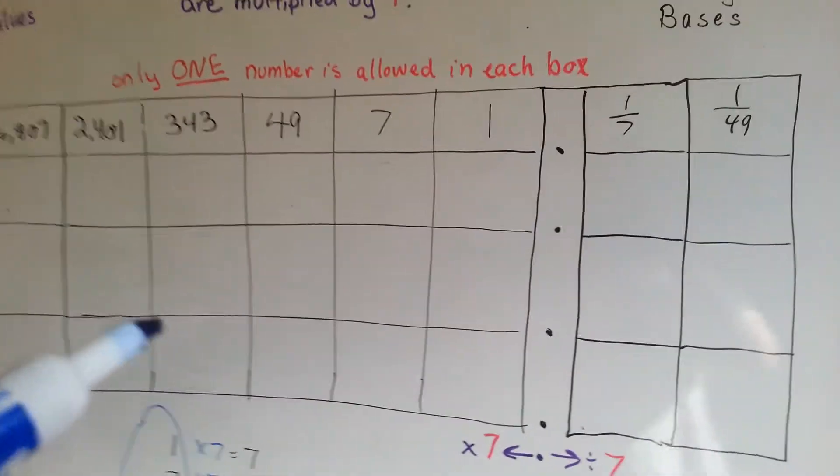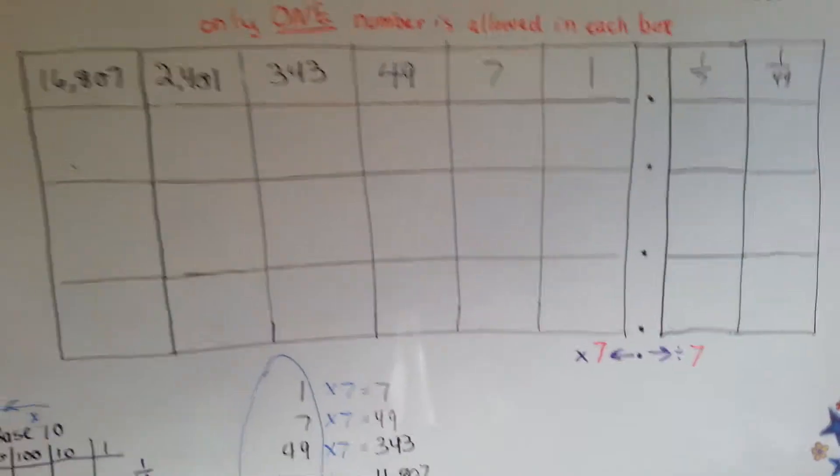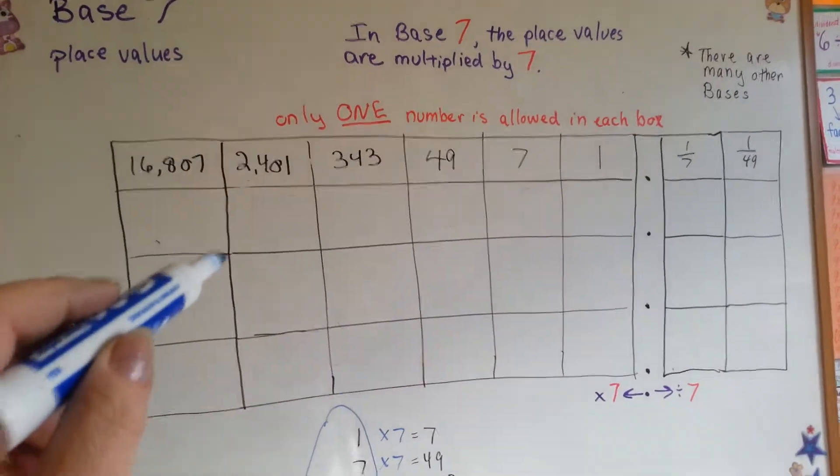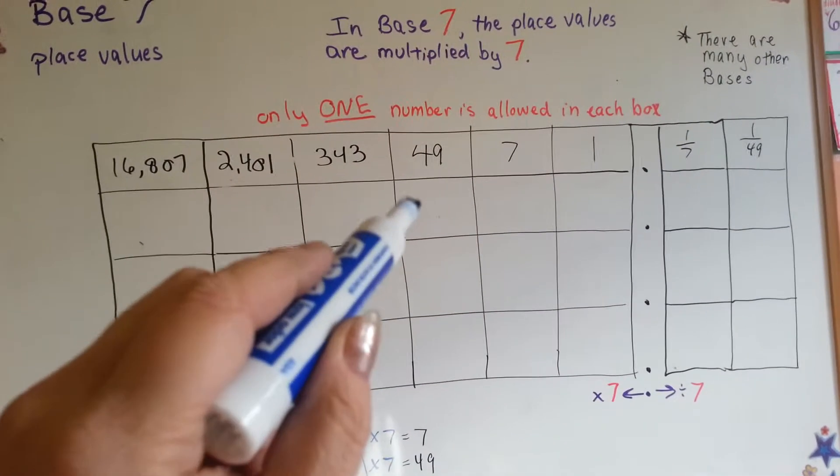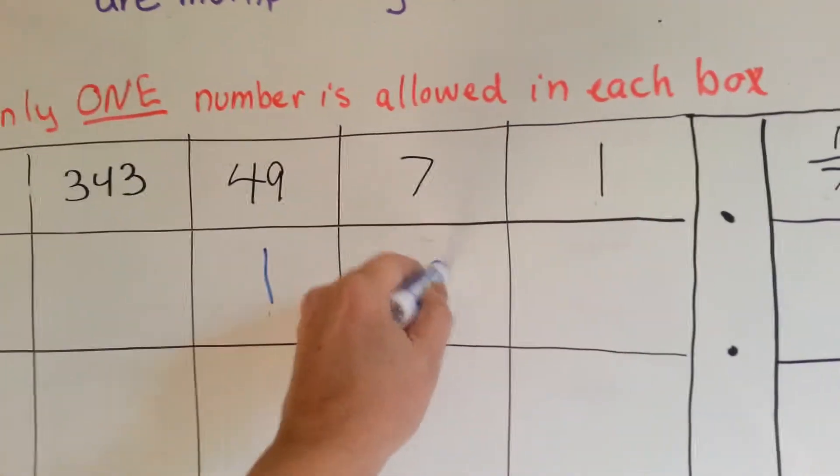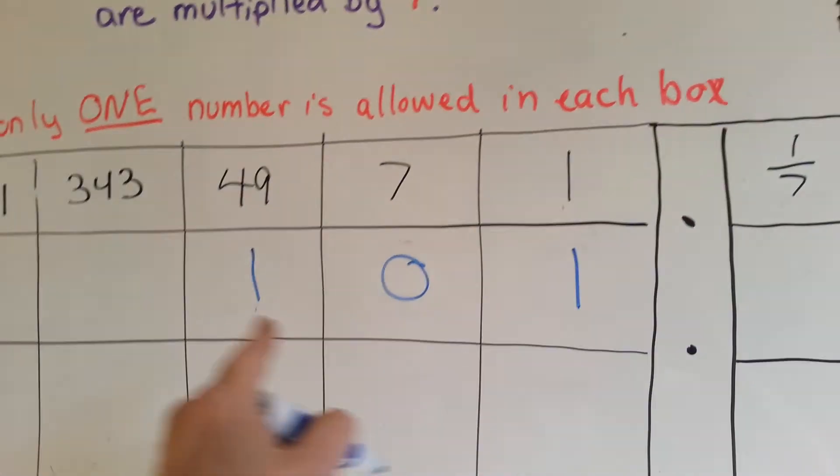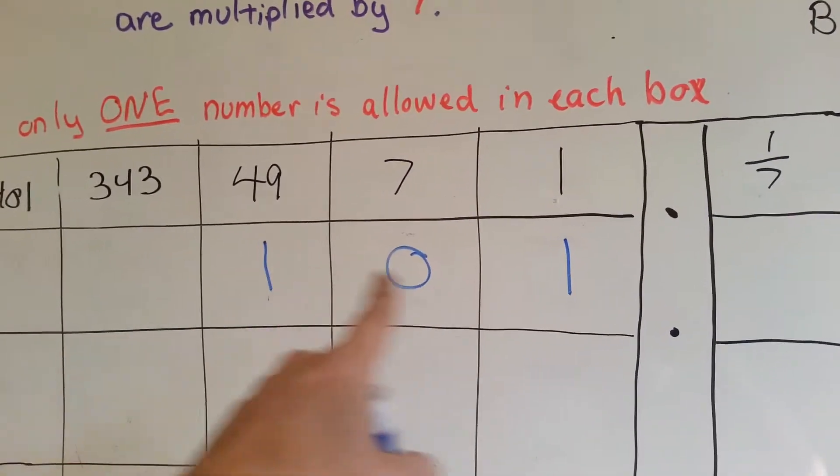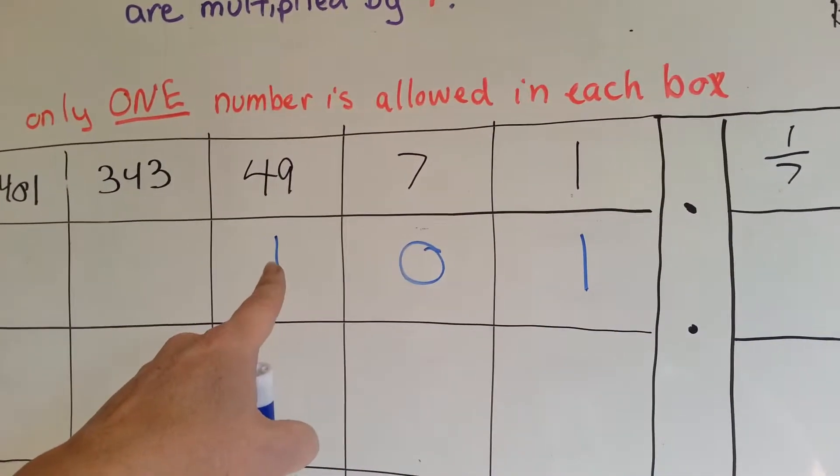So, check this out. In base seven, if we wanted to say the number fifty, you would have one forty-nine, zero sevens, and a one. And that would give you our base ten fifty.